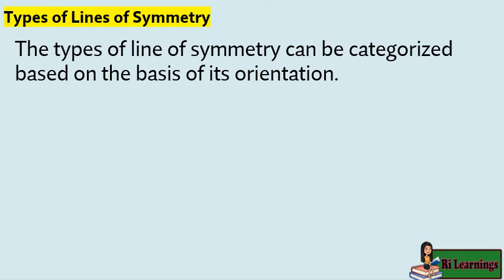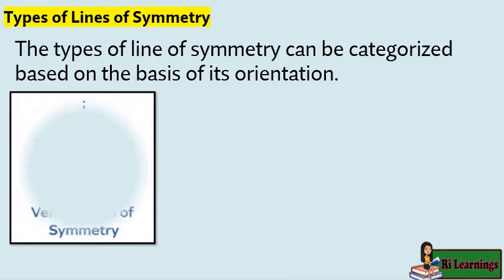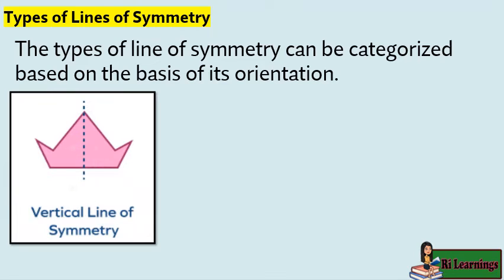The types of line of symmetry can be categorized based on its orientation. Vertical line of symmetry: if a vertical line divides an object into two identical halves, it is called a vertical line of symmetry. That means the vertical line goes from top to bottom, or vice versa, and divides the object into its mirror halves.